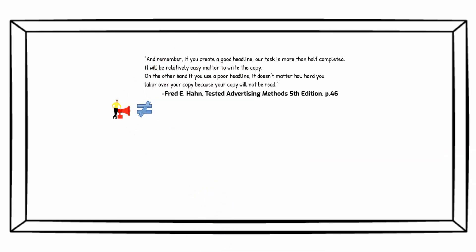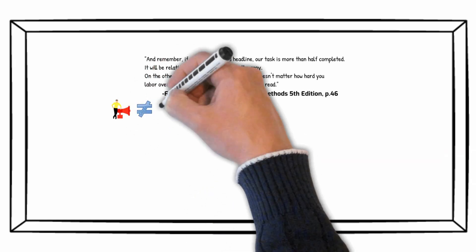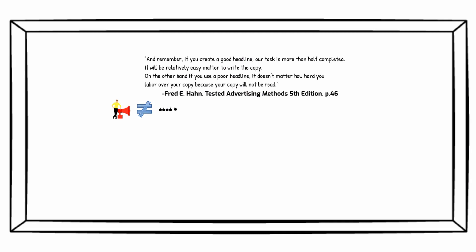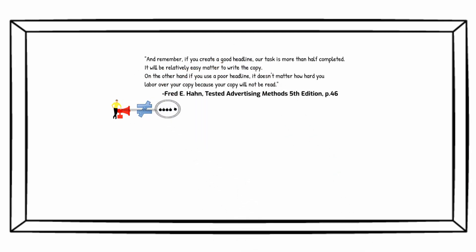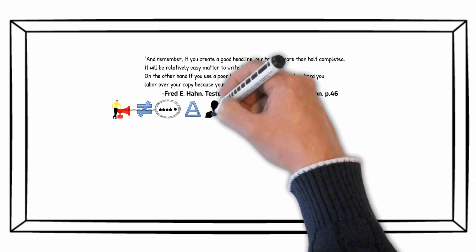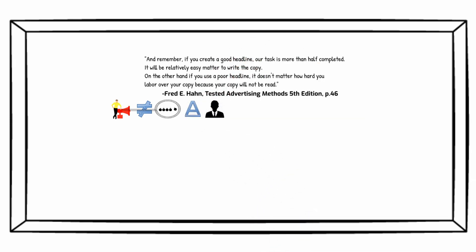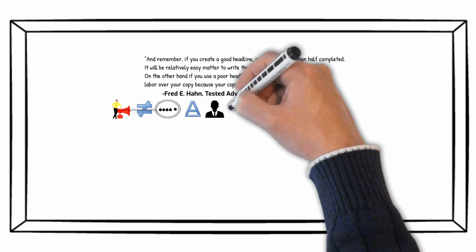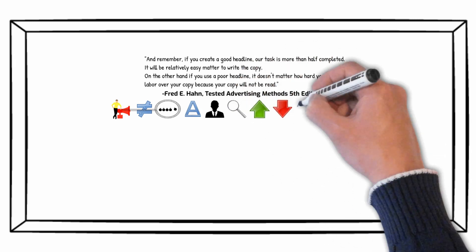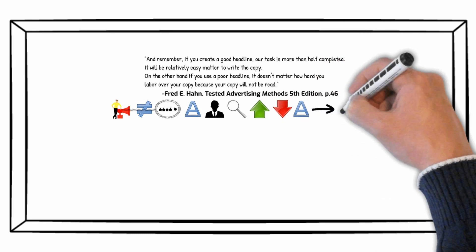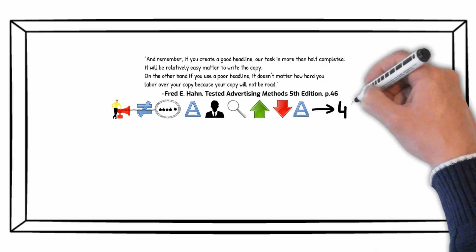Advertising is not an exact science such as physics, but you could get close to that nonetheless. Let's start with headlines. Fred E. Hahn, the author who wrote the 5th revision of Tested Advertising Methods, analyzed 10 successful and unsuccessful headlines and found 4 optimal headline appeals.